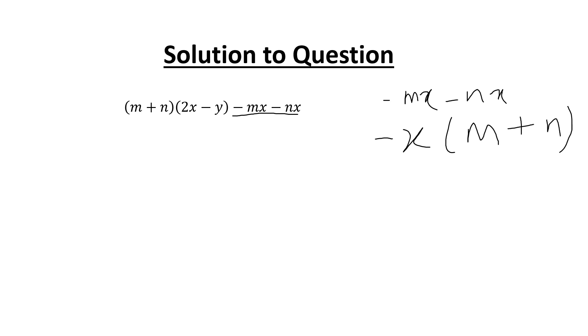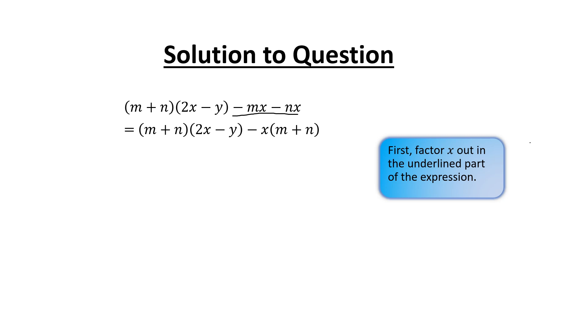So when I bring minus x out, this would be m, this would be n. You know that negative x times m is the same as negative mx. Positive n times negative x gives you negative nx. So you get this expression back. Now we've factored out the x in the underlined part of the expression.